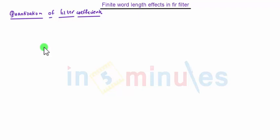This can be done either by truncation or rounding. This introduces error which causes the frequency response of the FIR filter to deviate from the desired response.